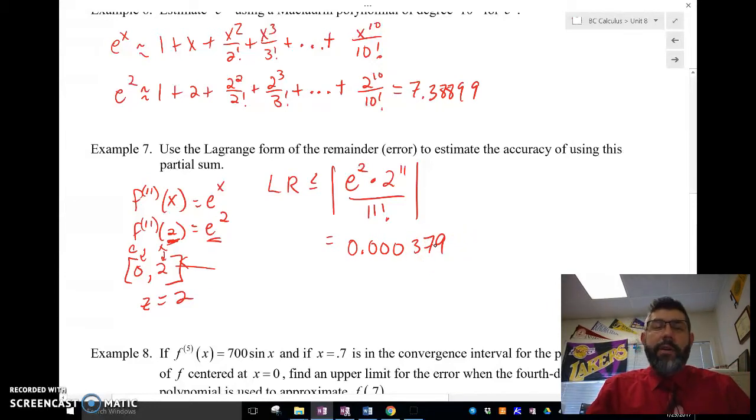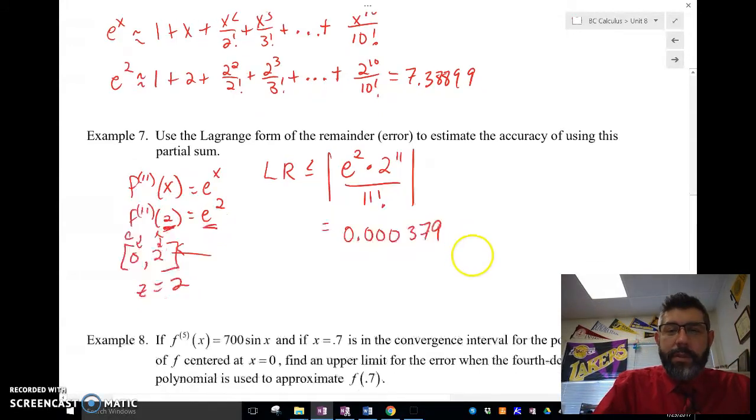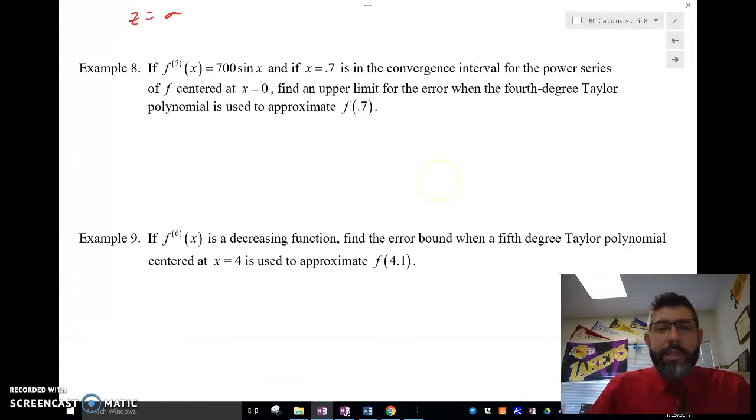Now, something to note here is that this error bound really isn't that great, because we actually had to use e squared, even though we're trying to estimate the error of e squared from the estimation. It doesn't really make sense to do that. So, it's not a very useful error bound, but I thought I'd give it because it's kind of an easy one to do. And if you're going, Mr. Rises, that wasn't easy. Just remember, you're taking the 11th term, and you're using a value for z, which is the maximum between 0, in this case 0, because that was c, and z, and x. Let's take a look at another example. I think these next two examples will make it make more sense.